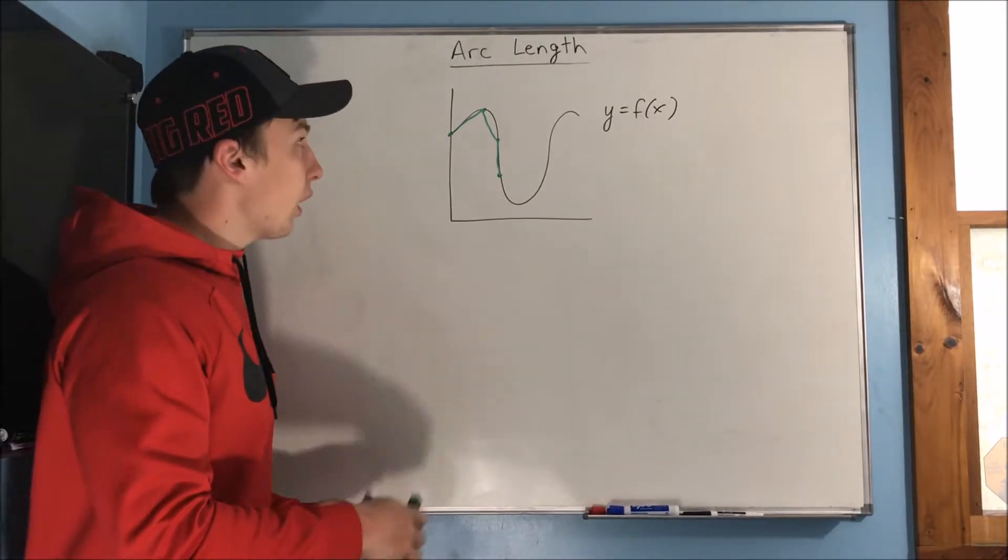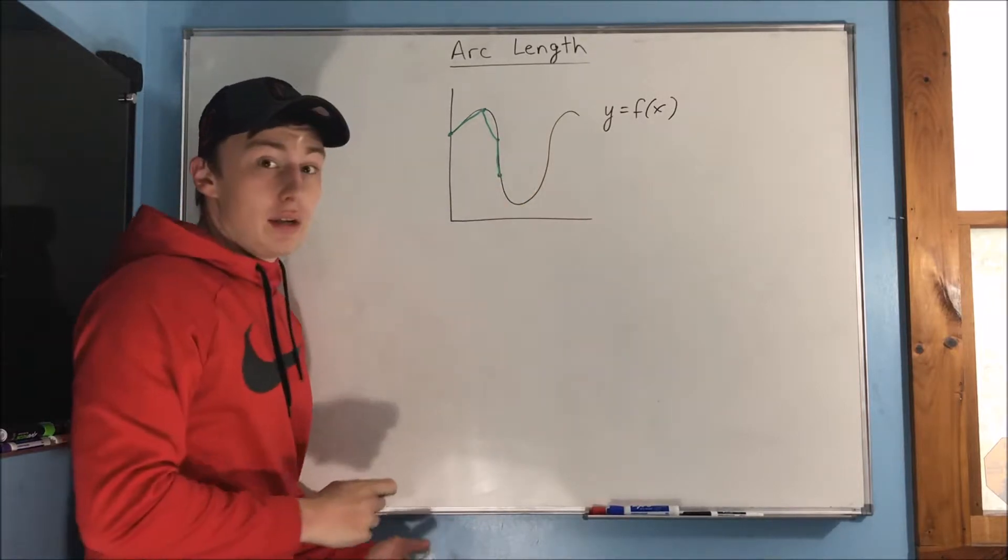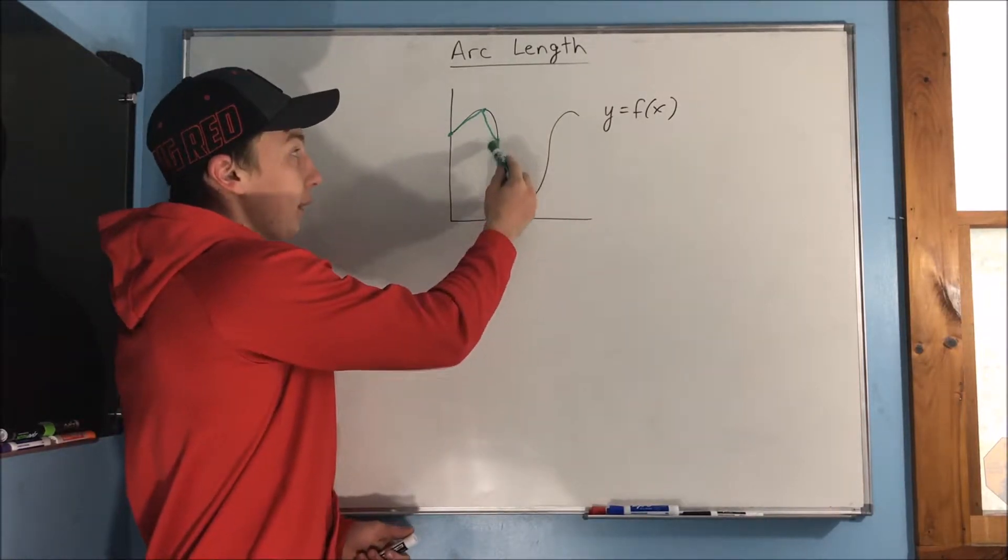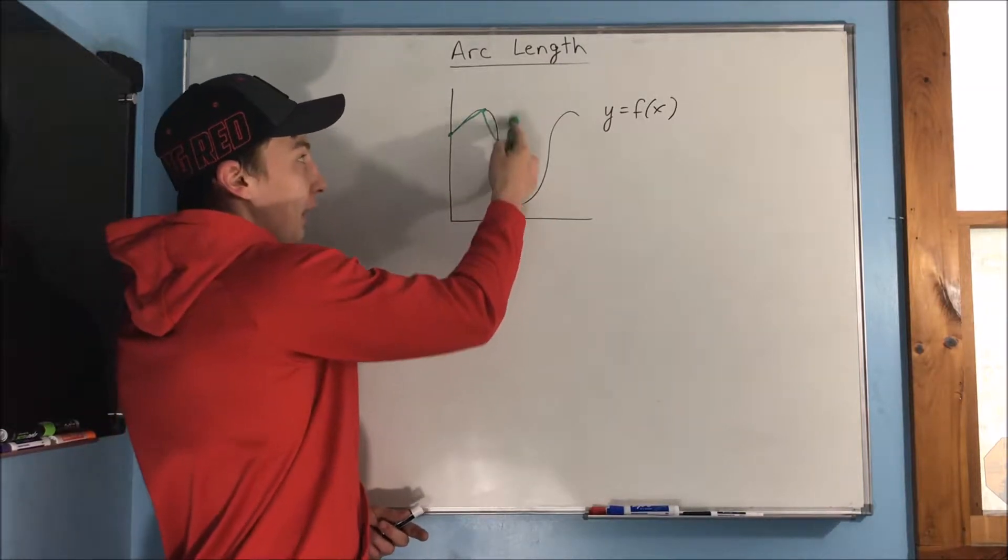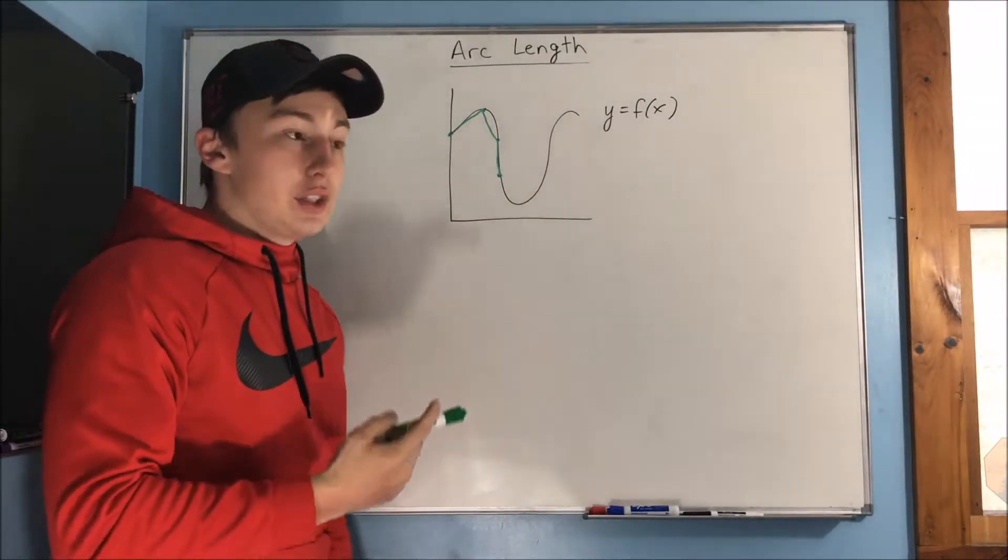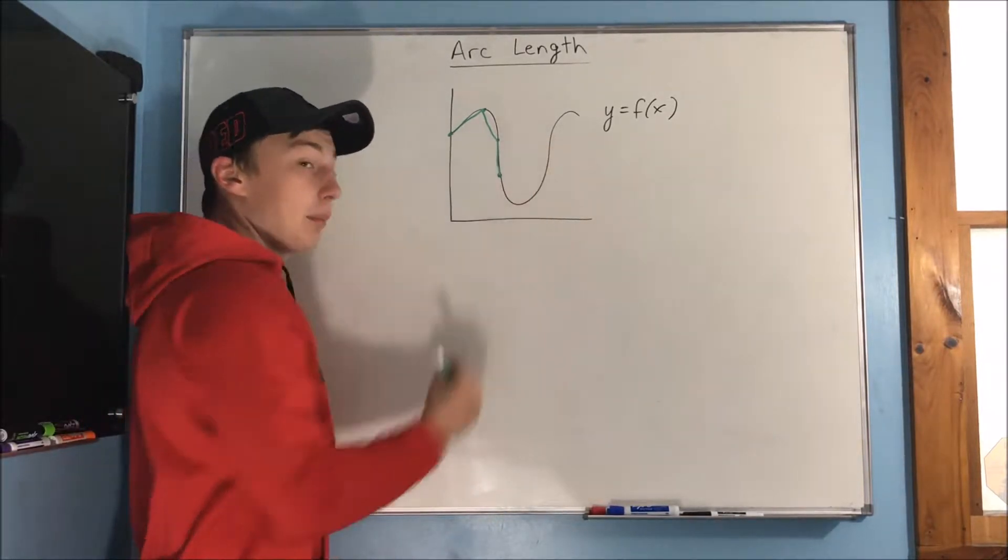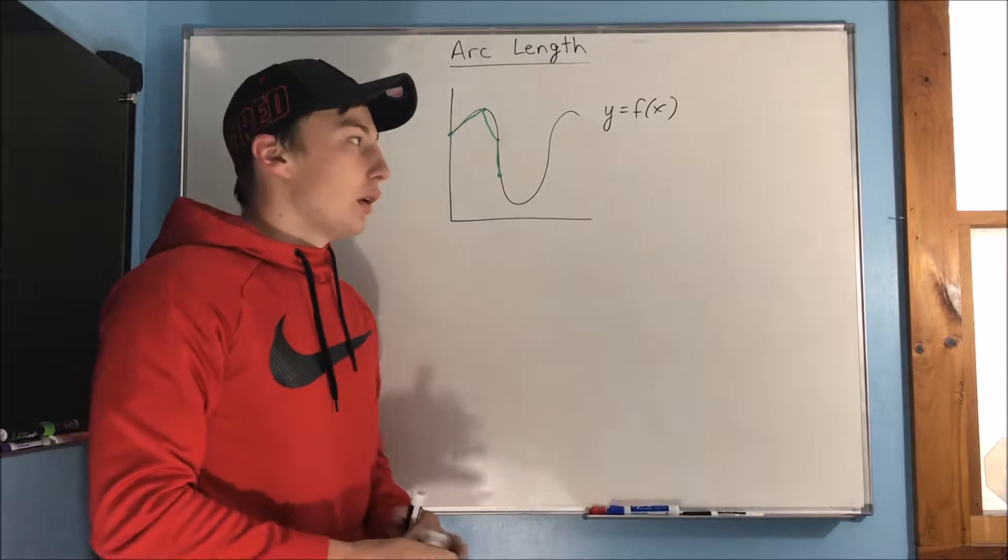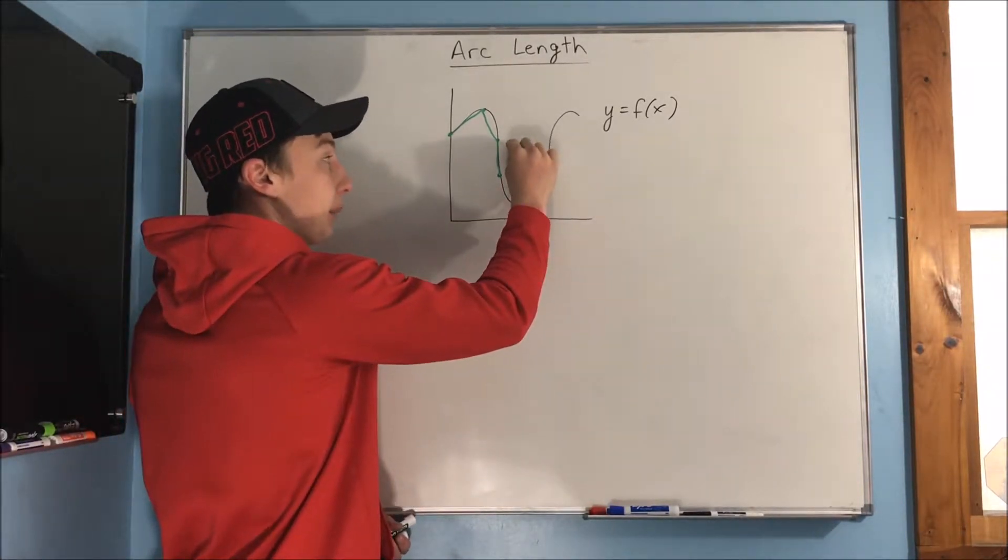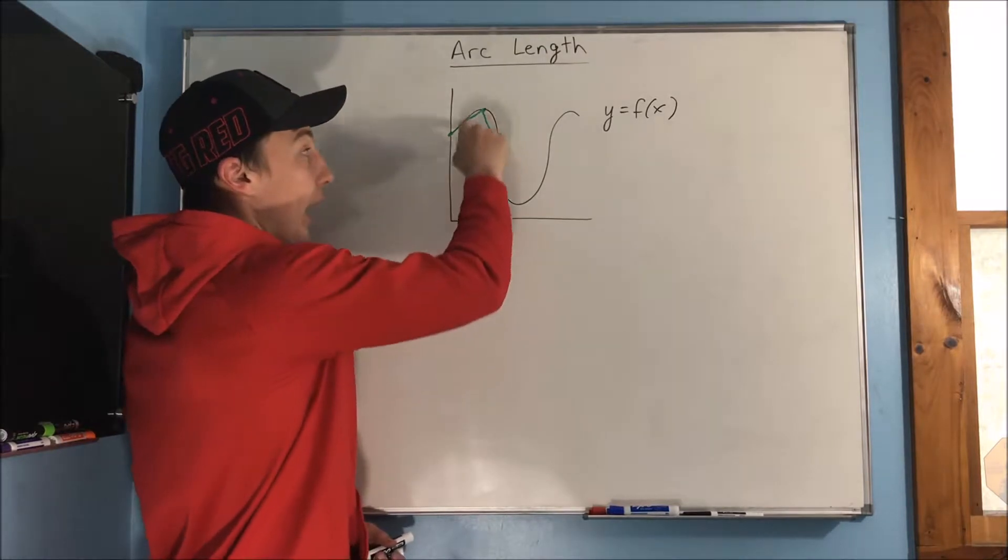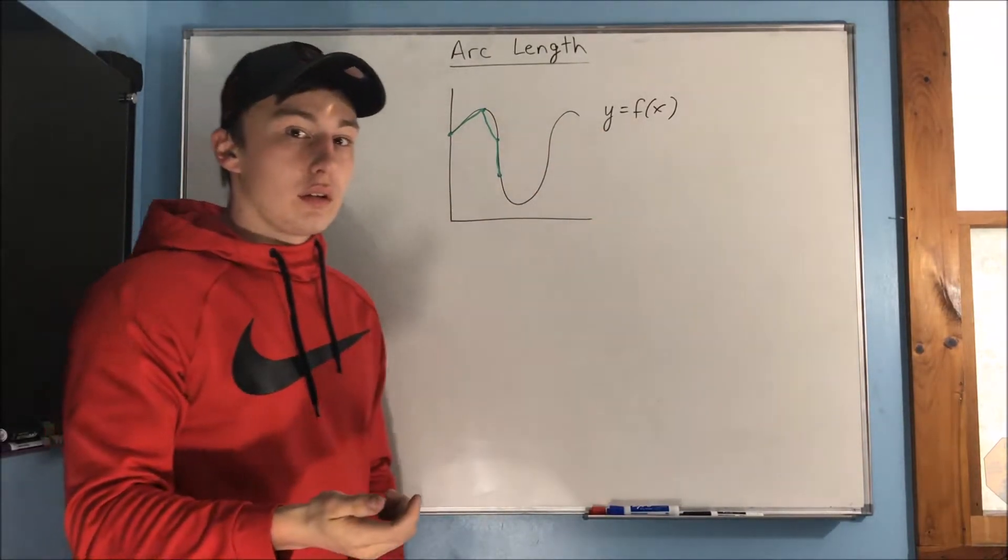Well, we can start off by just picking random points and connecting them with line segments. Now you can see that this segment right here is a lot different than the actual curve. So what you would need to do is make these segments infinitesimally small so they can fit the curve right. So if you make all these line segments infinitesimally small and you add all of those lengths up, you get your total arc length.